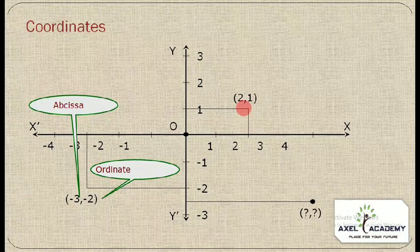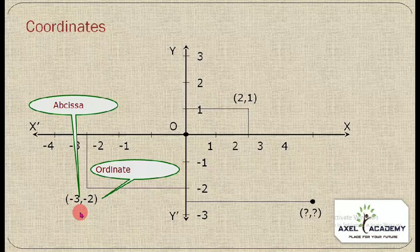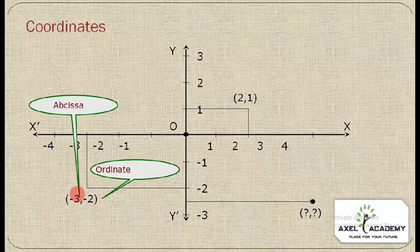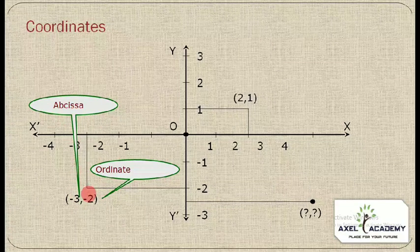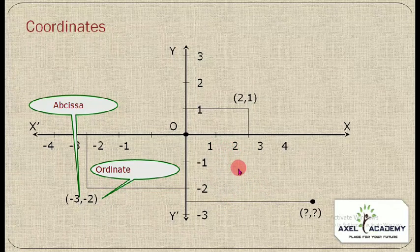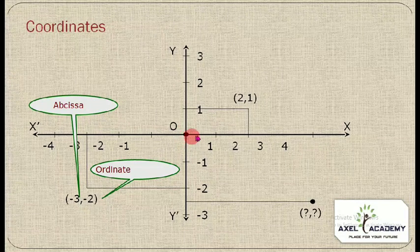For example, the point (2, 1) has both coordinates positive, so it lies in the first quadrant. The point (−3, −2) has both coordinates negative, so it lies in the third quadrant. The x-coordinate is called the abscissa and the y-coordinate is called the ordinate.